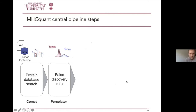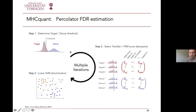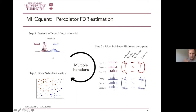As a next step, false discovery rate estimation is carried out. We use a more advanced method called Percolator — I recommend reading the paper by Lukas Käll in Nature Methods 2007. In contrast to the classical approach of computing FDR using a univariate target-decoy distribution, Percolator achieves multivariate separation through an iterative machine learning approach where spectrum matches are compared by a variety of different scores, achieving better discrimination between target and decoy distributions.